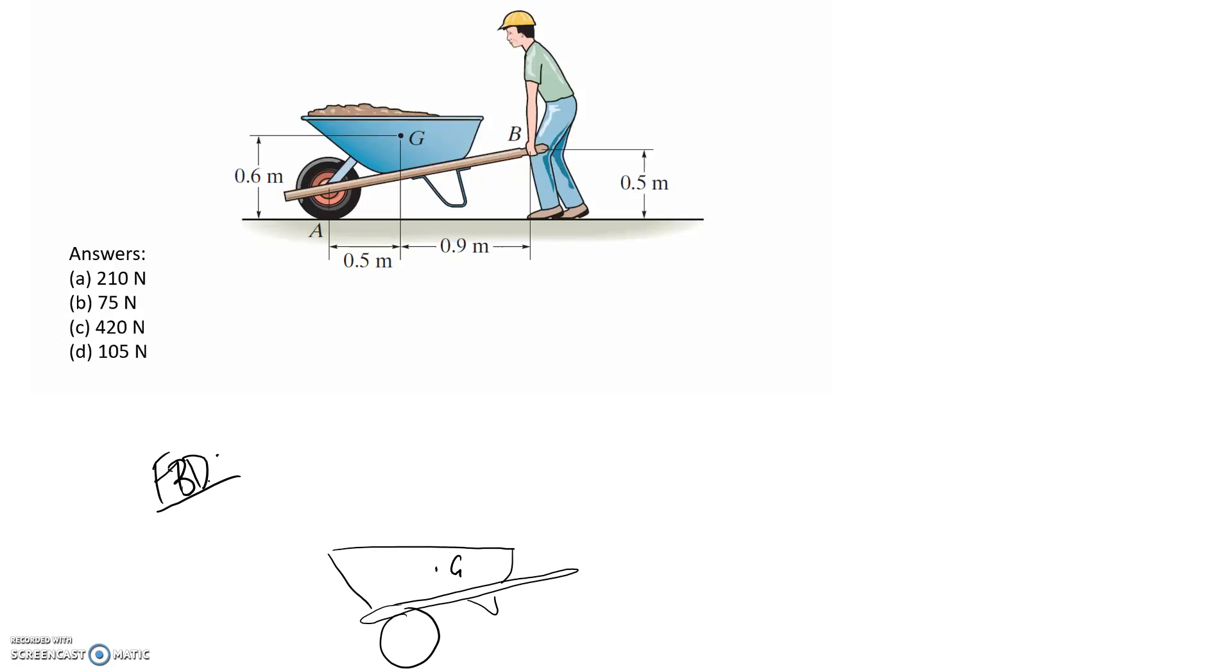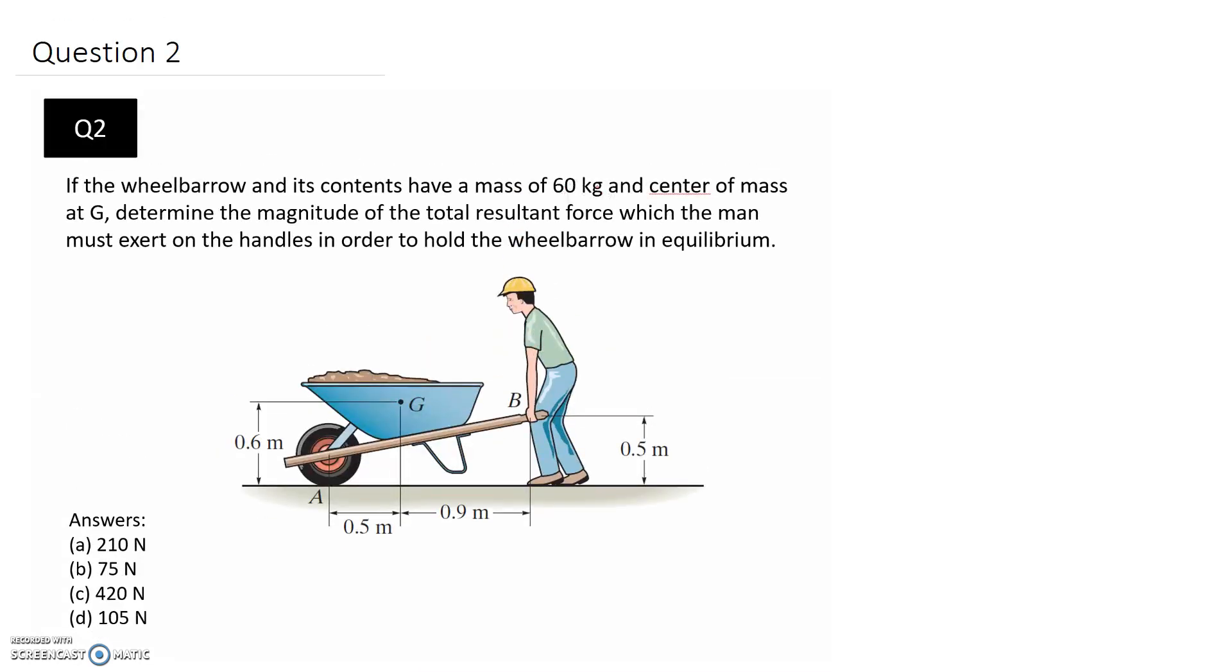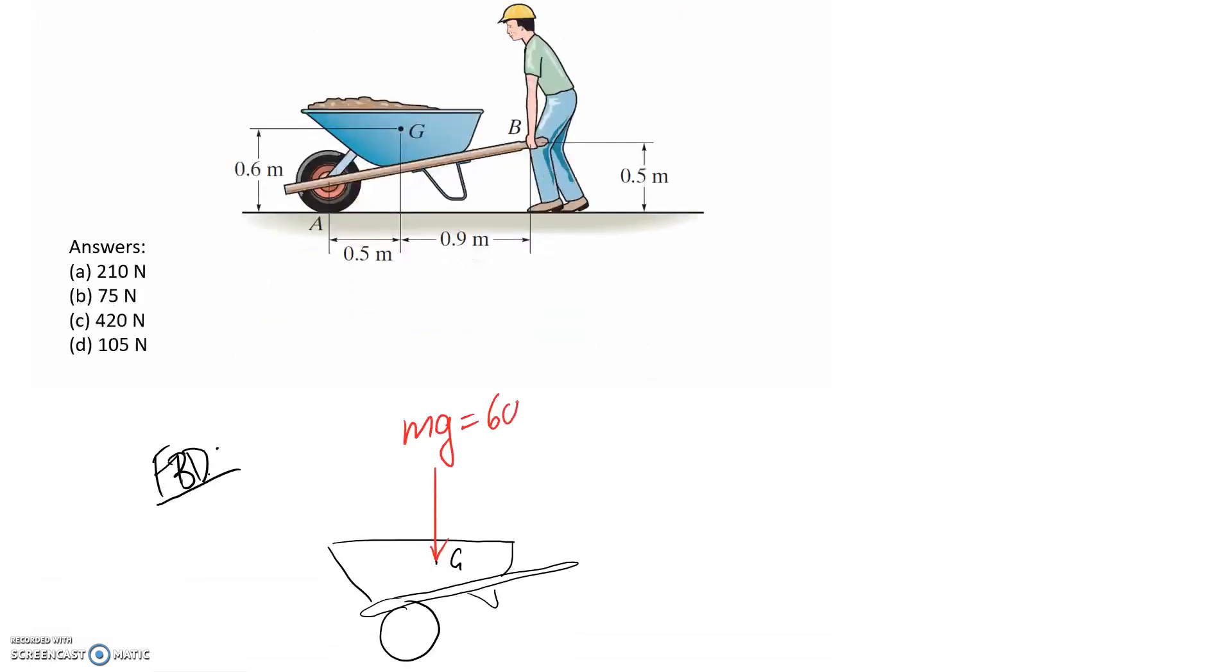So the first one I'm going to put on is the weight of the actual wheelbarrow and we can assume that this acts through the center of gravity which is G, and we know that weight is equal to mass times gravity and it told us that the mass was 60 kilograms. So 60 by 9.8 gives us a total of 588 newtons.